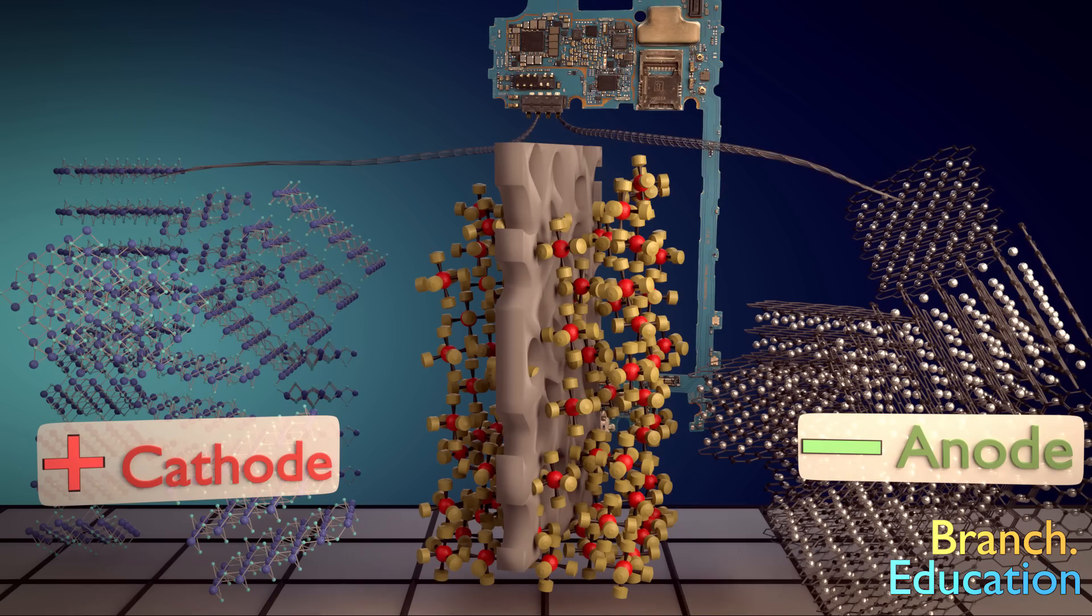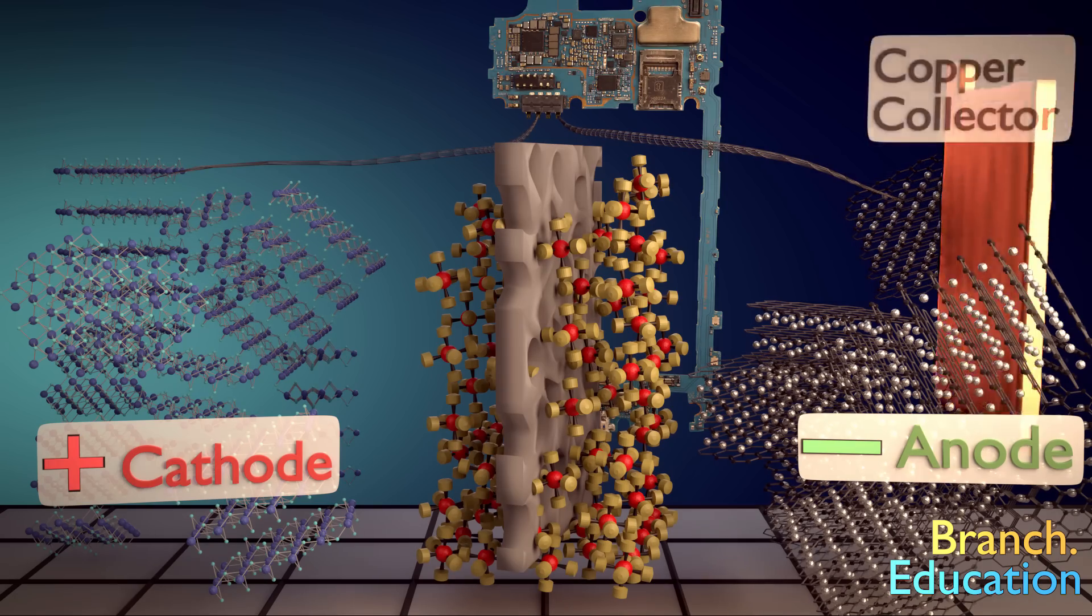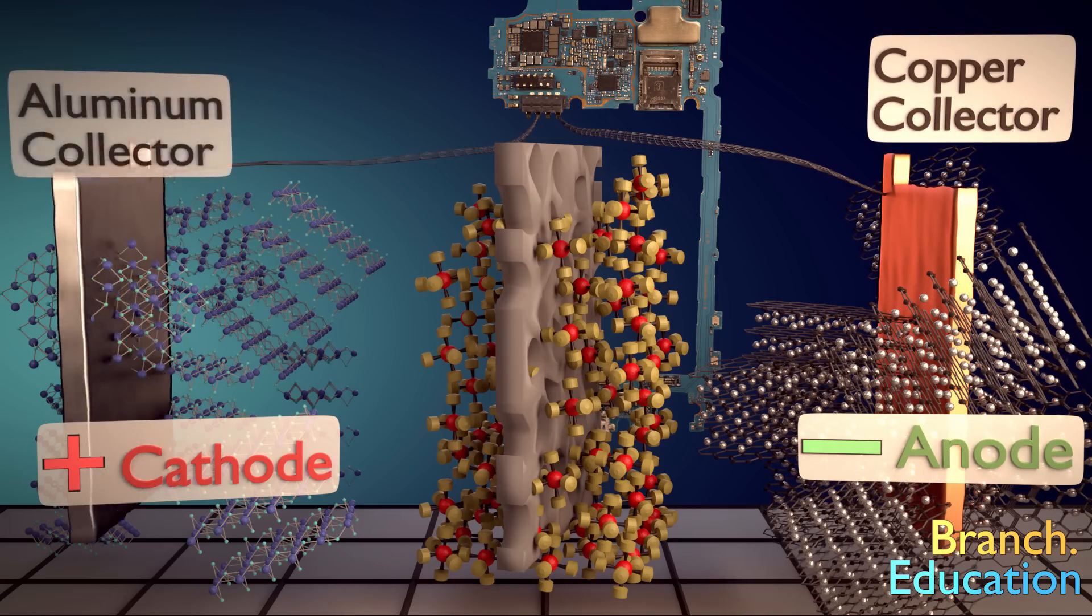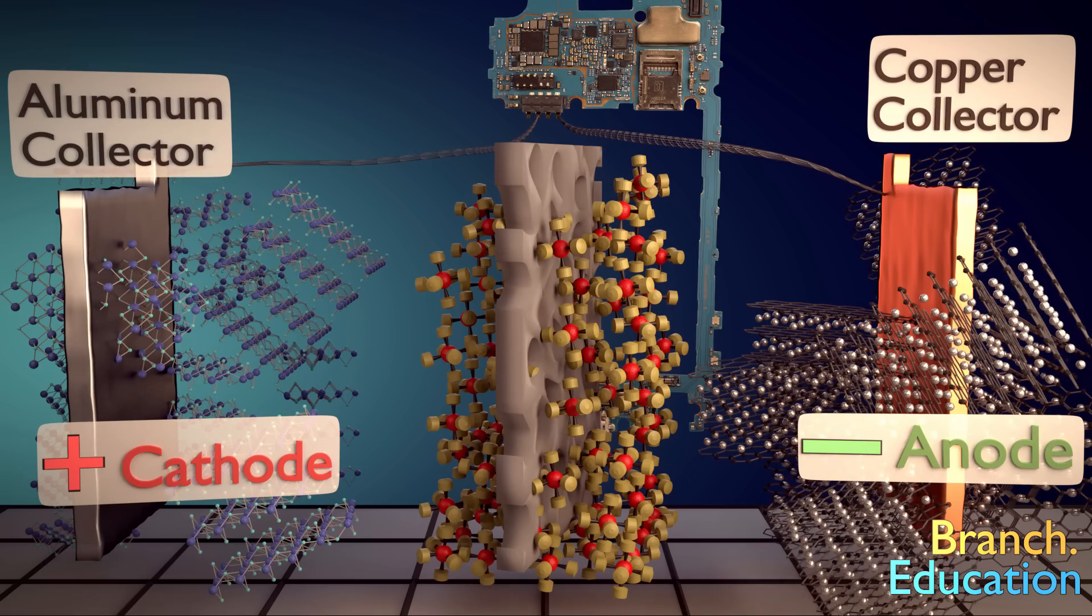The second thing to note is that the graphite and cobalt peroxide aren't good at collecting or distributing the electrons. Thus, a conductive copper layer is added next to the graphite, and a conductive aluminum layer next to the cobalt peroxide. These two layers, or sheets, are called collectors. Okay, on to third.